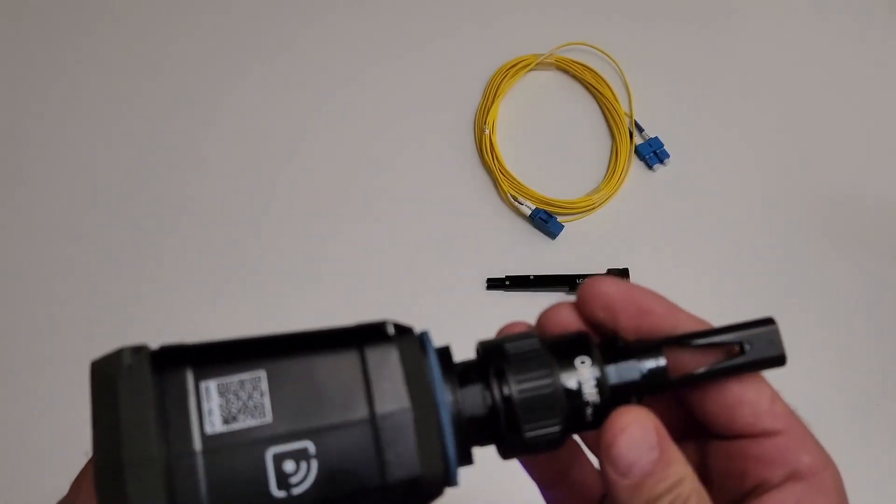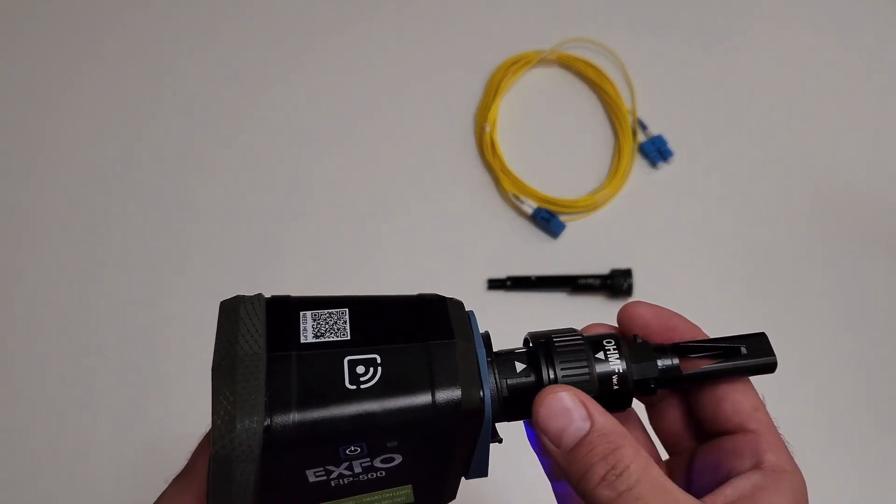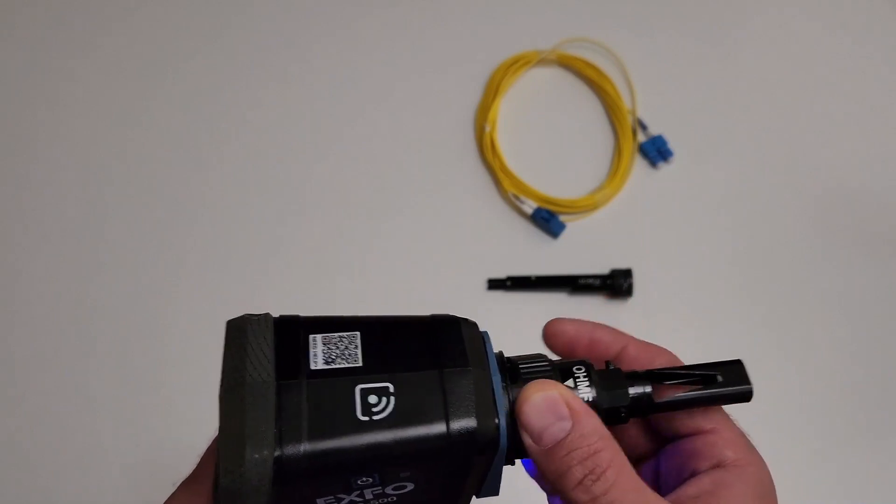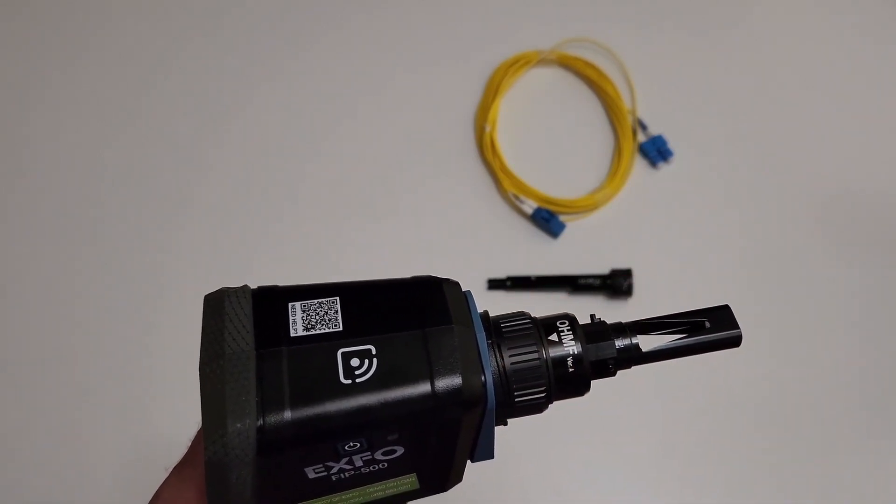First, align the arrow on the OHMF optical head with the arrow on your unit and then gently put the optical head back in place. Then, slightly turn the optical head retaining nut clockwise to secure it in place.